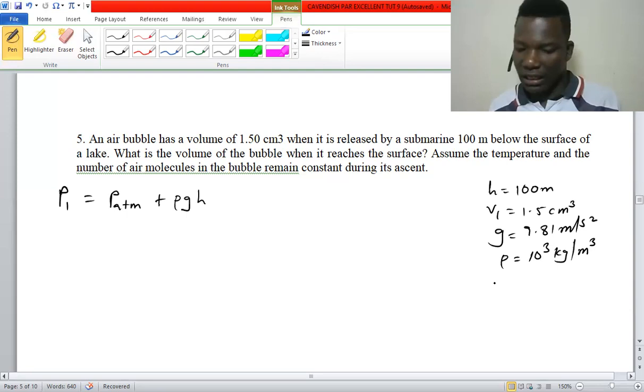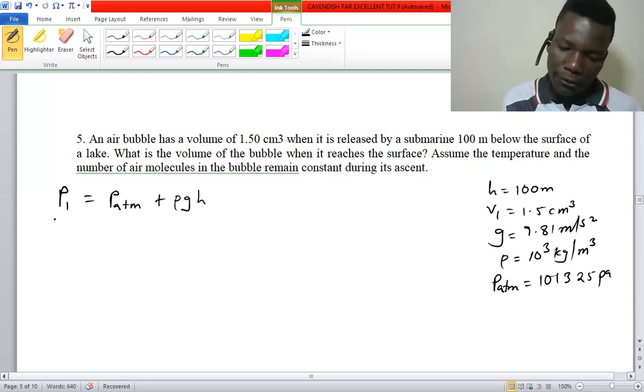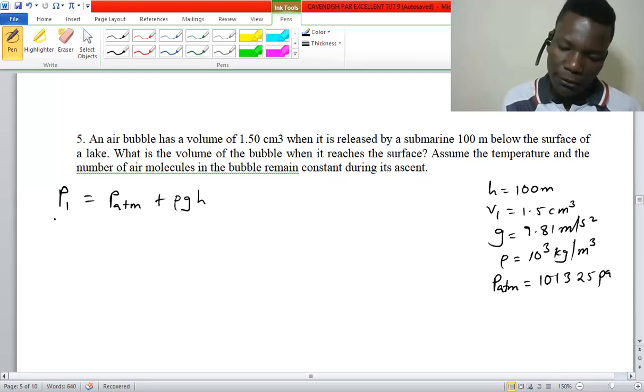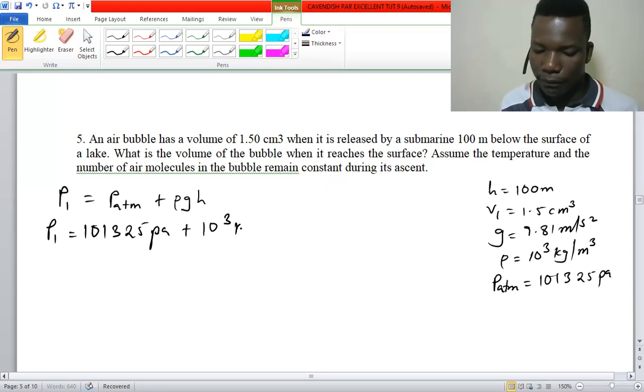And atmospheric pressure we have 101325 Pascal. So we are going to have pressure one, which is 101325 Pascal plus density of water, because that's the fluid that this bubble was in, and we have 9.81 and also height of 100 meters.